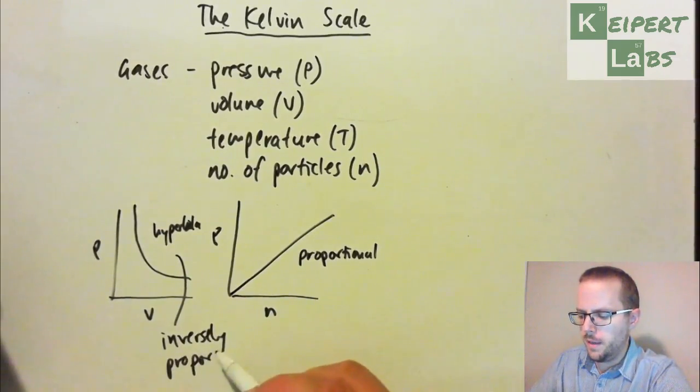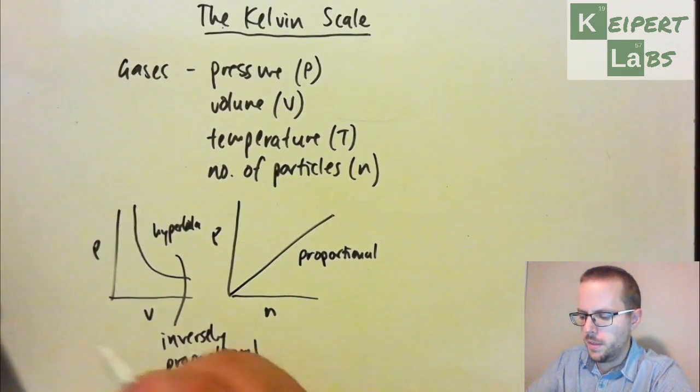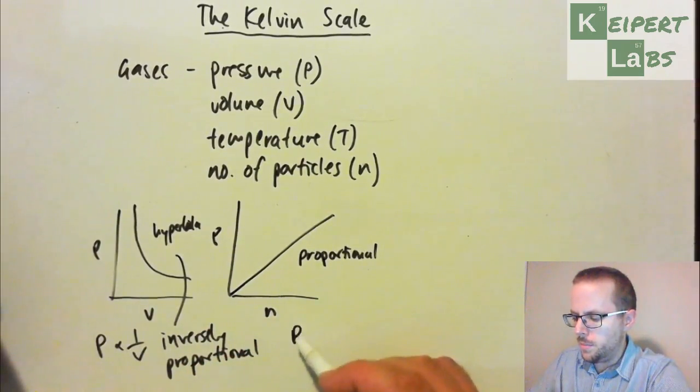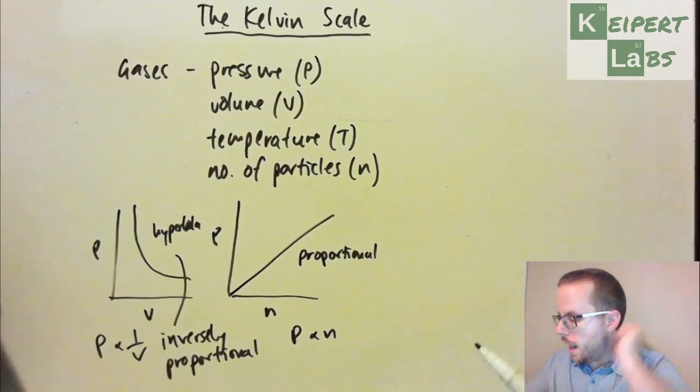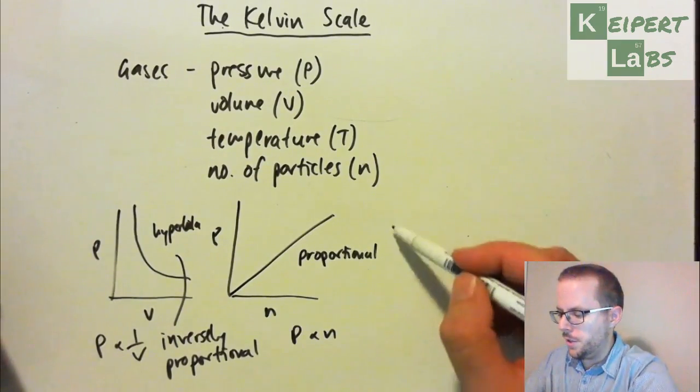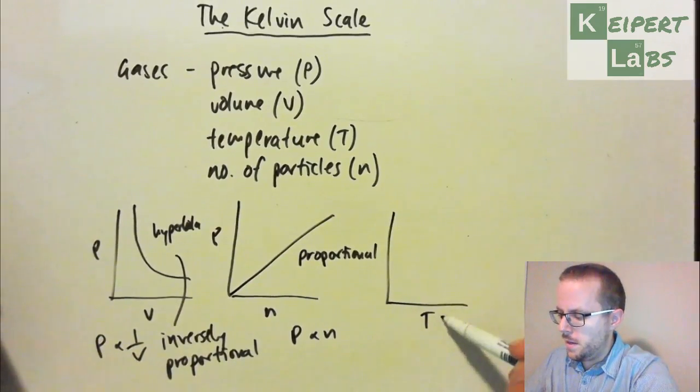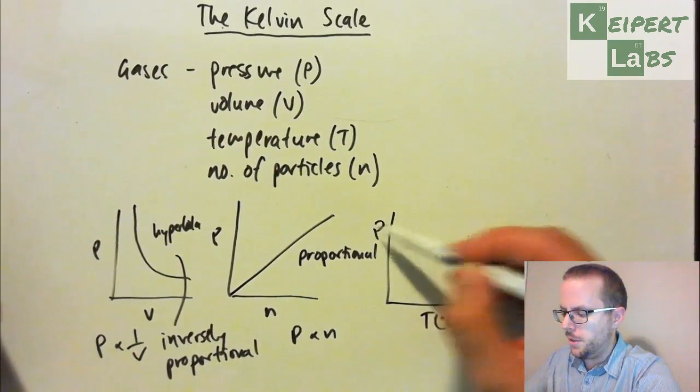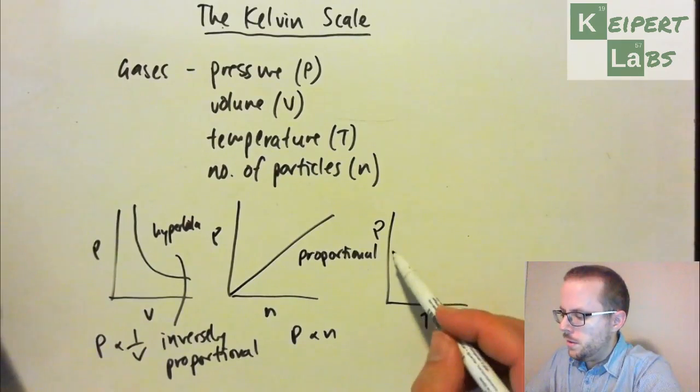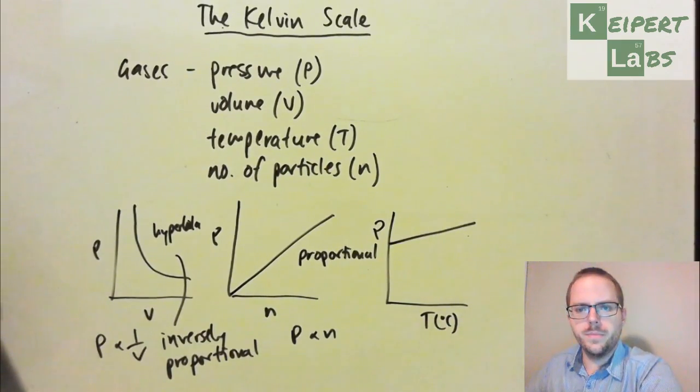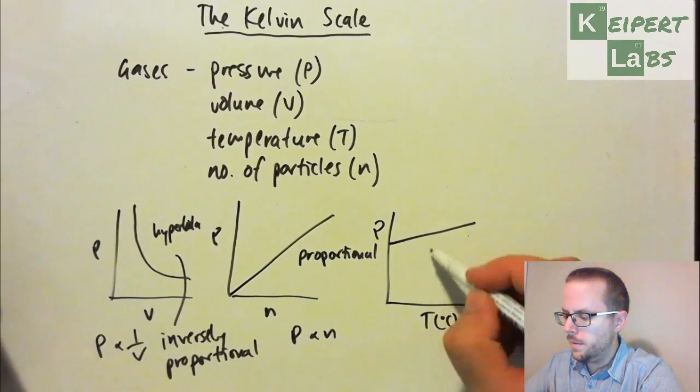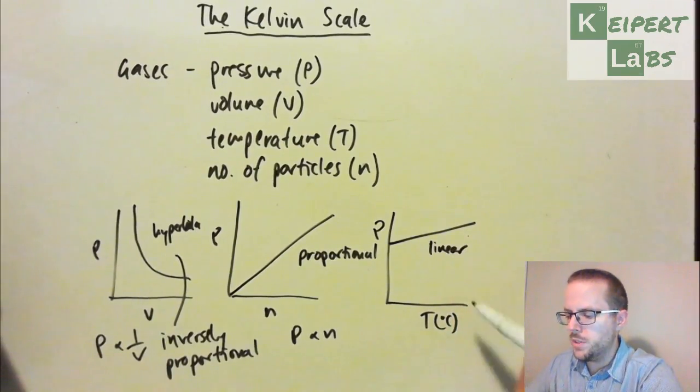As one goes up, the other goes down. So we said P is proportional to 1 over V, inversely proportional. P is proportional to the number of particles. And then we introduced an interesting relationship looking at temperature in Celsius and pressure. We saw this kind of linear relationship, but it was not proportional.